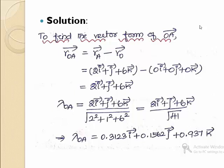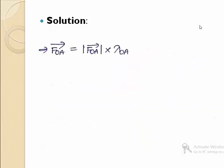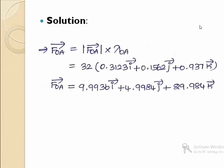The first force acts along the OA direction. The force vector FOA equals the magnitude multiplied by the unit vector along OA. So, FOA = 9.9936i + 4.9984j + 29.9984k. Using the same procedure, the remaining three force components are also represented in vector form.